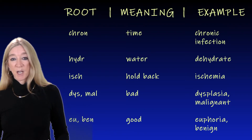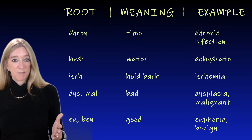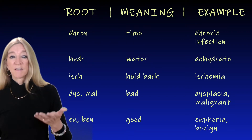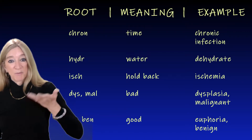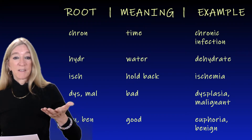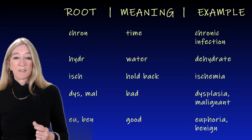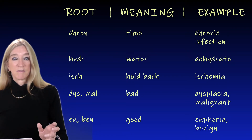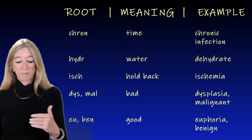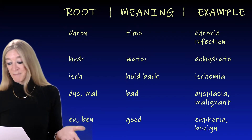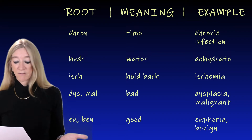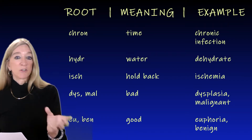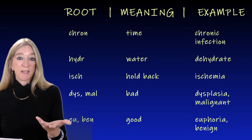The next roots are the opposite, 'eu' and 'ben,' both meaning good. Euphoria is a good feeling, sometimes excessively happy. A benign tumor is one that is not necessarily good, but at least it's harmless. There are plenty of words in everyday life with these roots: benevolent, benefit, eugenics, euthanasia, and eulogy — good words — which is the speech you make at someone's funeral.